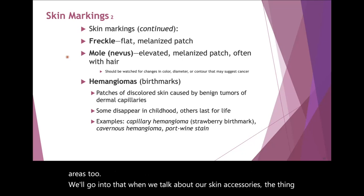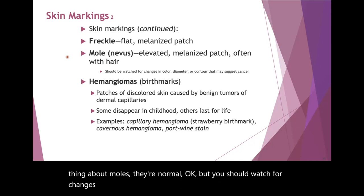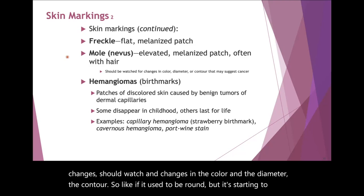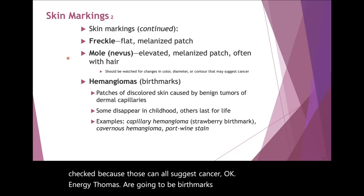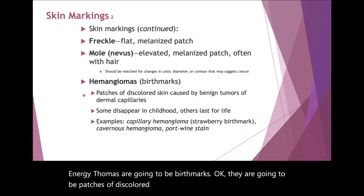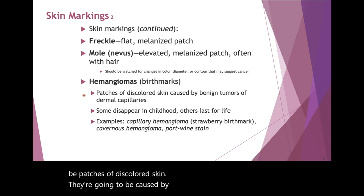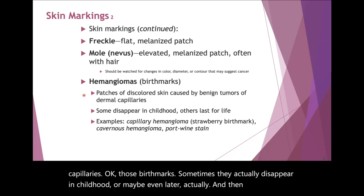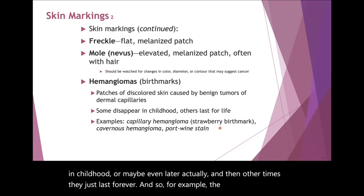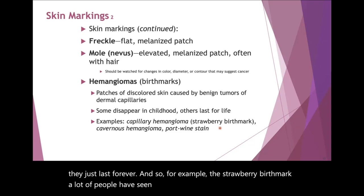The thing about moles — they're normal. But you should watch for changes in the color, the diameter, and the contour. If it used to be round but it's starting to get weird edges on it, that should definitely be checked because those can all suggest cancer. Hemangiomas are going to be birthmarks — patches of discolored skin caused by benign tumors of the actual dermal capillaries. Sometimes they actually disappear in childhood, and other times they just last forever. Examples include strawberry birthmarks and port wine stains.